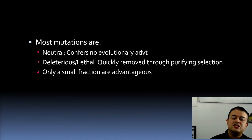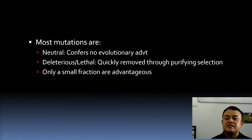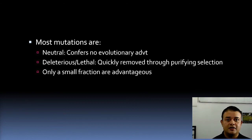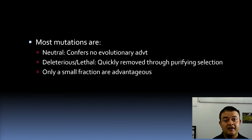Most mutations are neutral — they confer no evolutionary advantage — which is the basis of the neutral theory of evolution. Some deleterious or lethal mutations are quickly removed through purifying selection. Only a small fraction of mutations are advantageous, and only that fraction is concerned with Darwin's theory of natural selection and adaptive evolution.